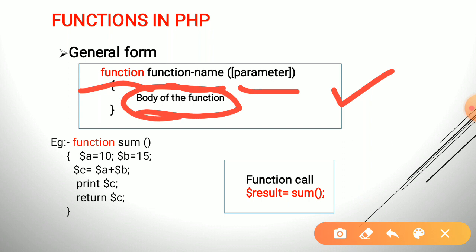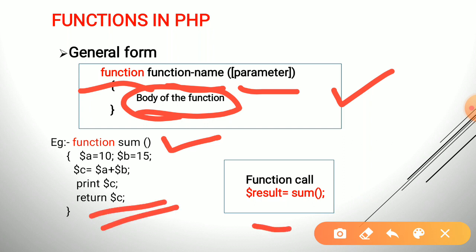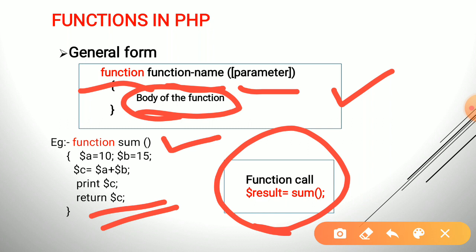We can call a function by specifying the function name along with parameters if any. The function may or may not return a value using a return statement, and a variable should be declared to receive the returned result. For example, a function named 'sum' takes no arguments, calculates the sum of two numbers, and returns it. The function call is: dollar result equals sum(). The result gets stored in dollar result.